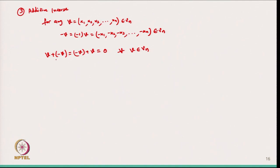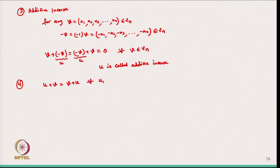The fourth property: for any elements U and V, we can show that U + V = V + U for all U, V in Vn. Since elements are made up of real numbers, we can do componentwise addition and change the position of elements. This gives commutativity. These four properties are satisfied, so this is a commutative group under addition.